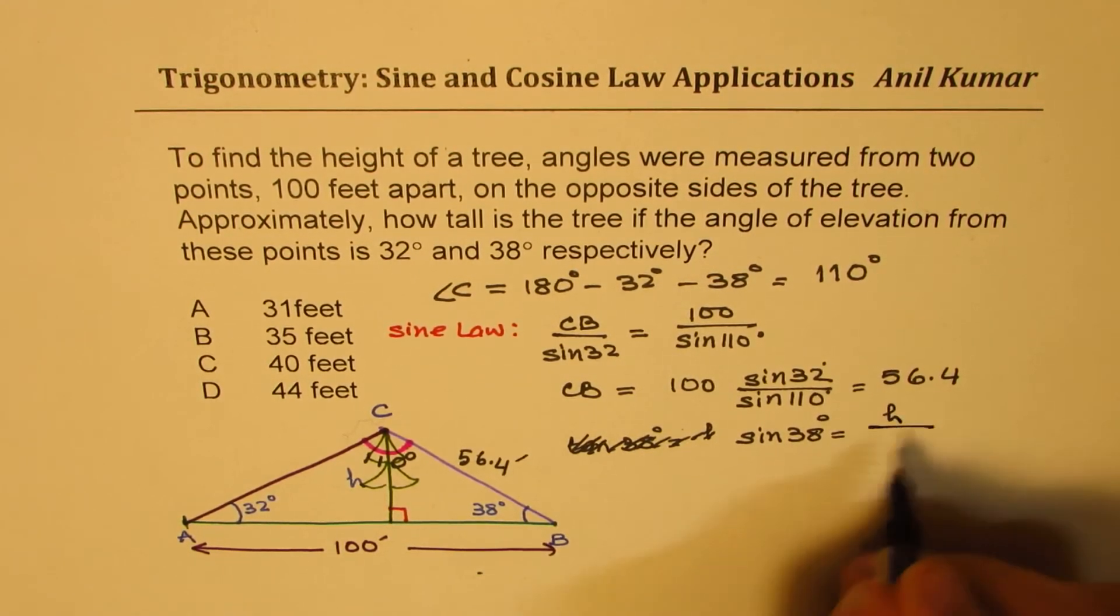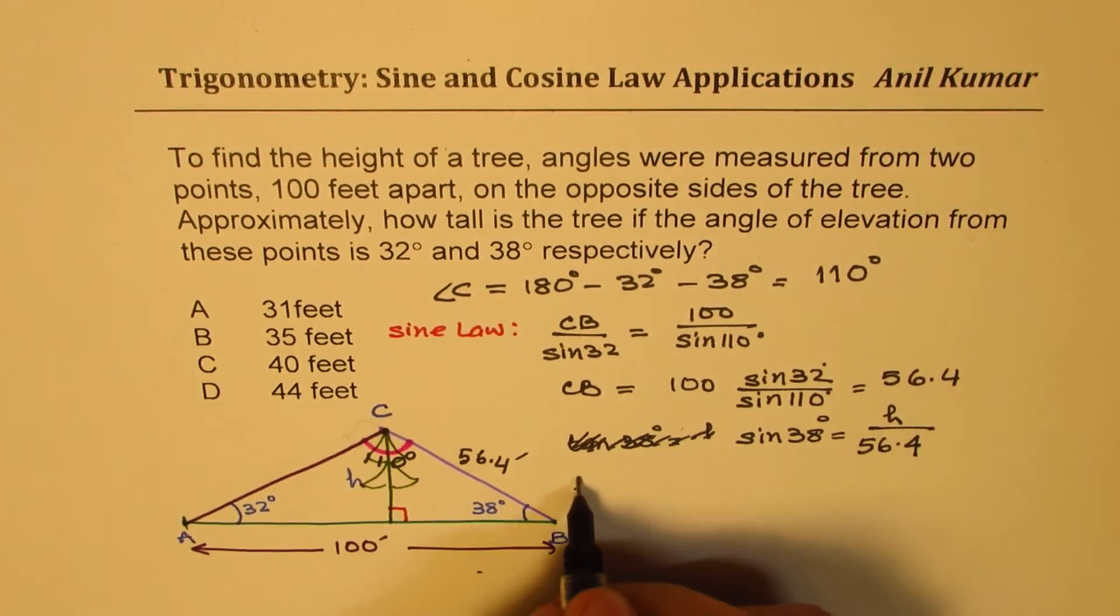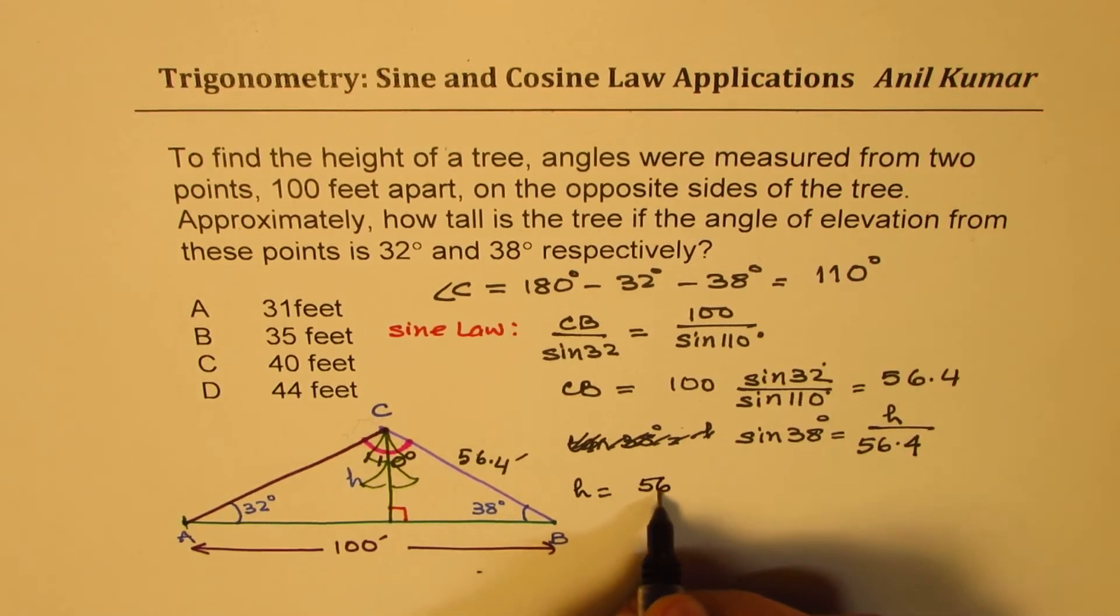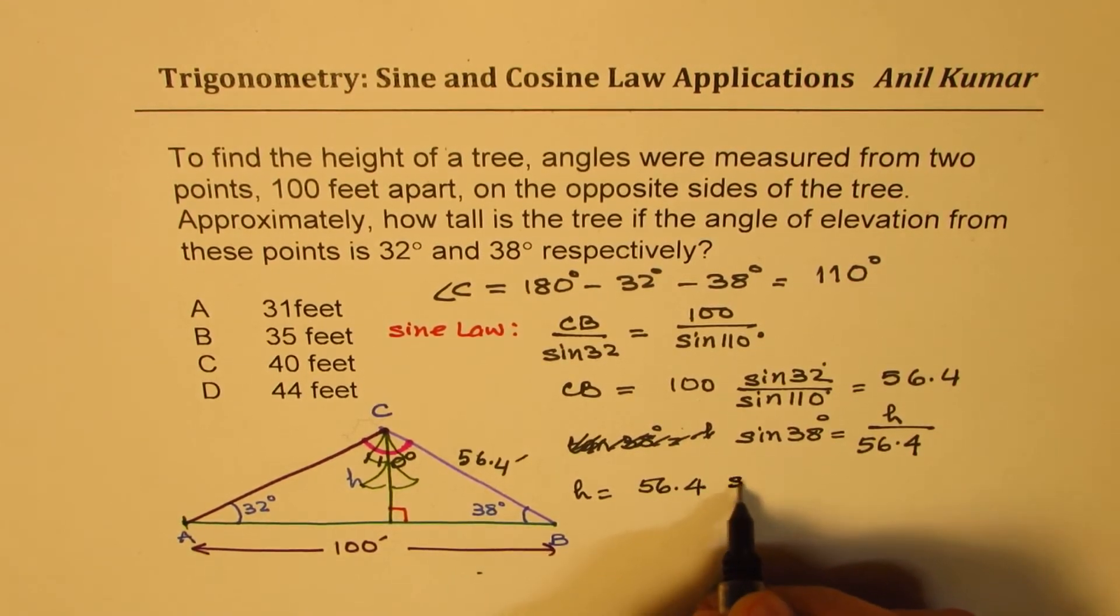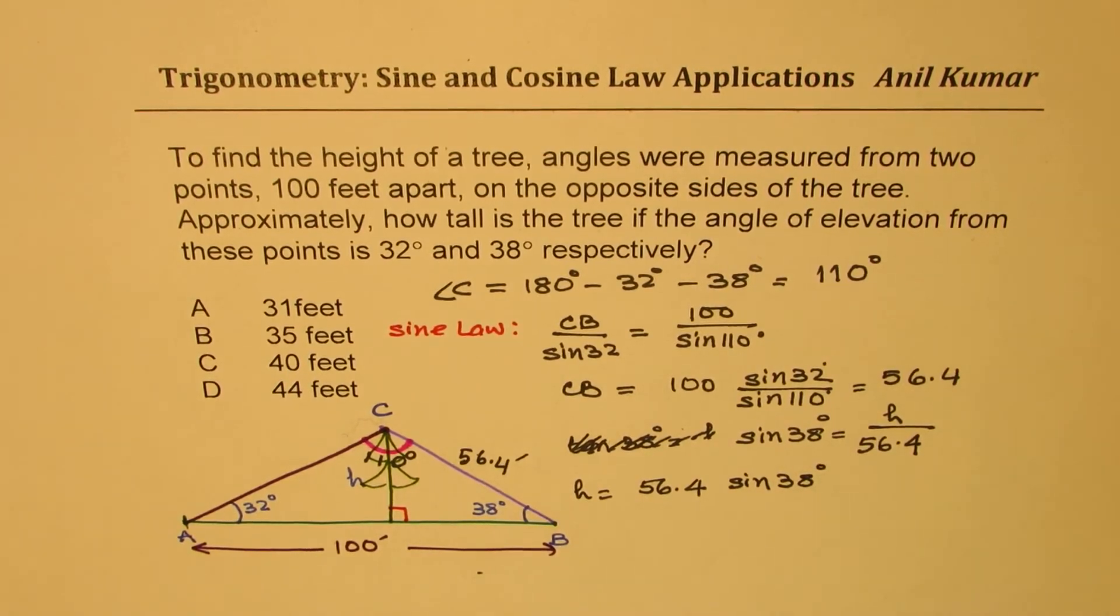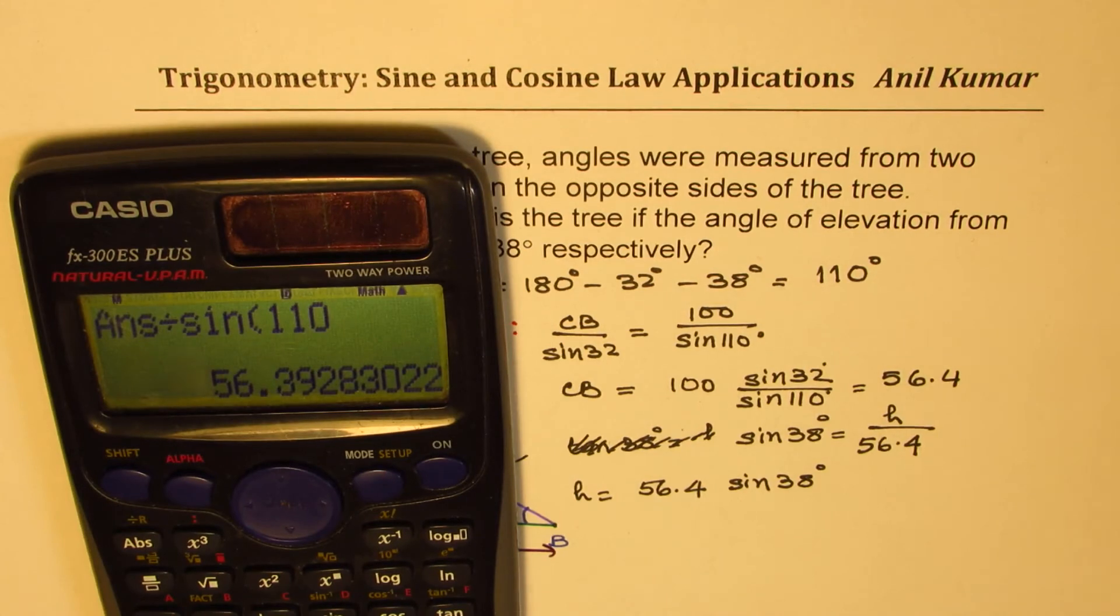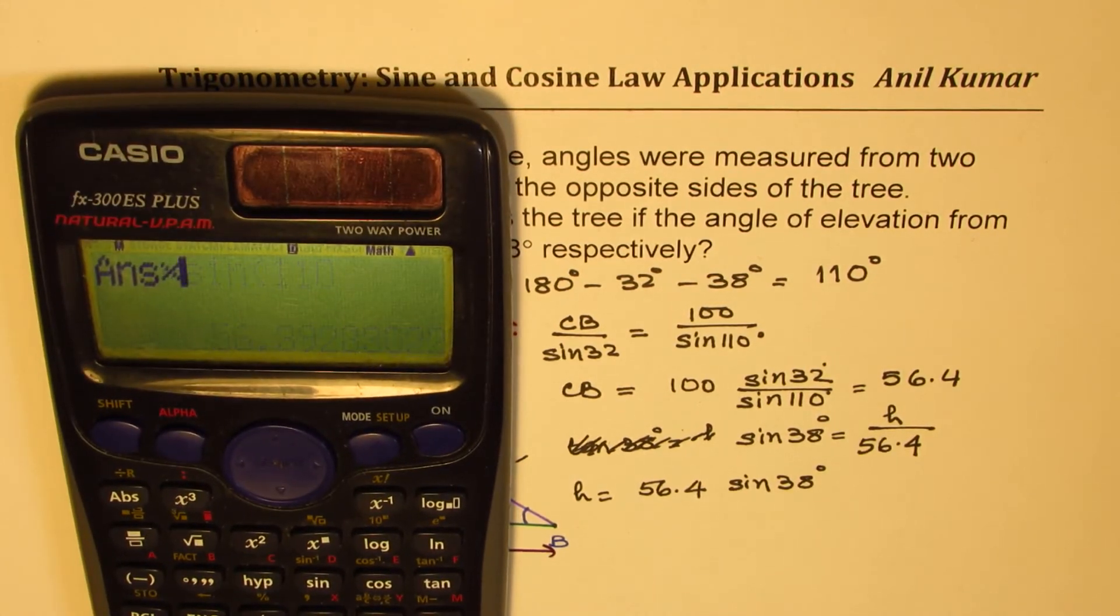To find the height using tan ratio over 56.4, height h is equal to 56.4 times sine of 38 degrees. We already have that 56 point something, we'll just multiply this by sine to get our answer.